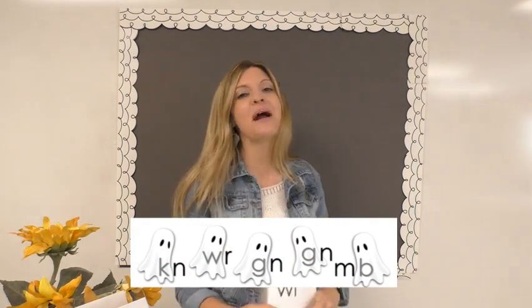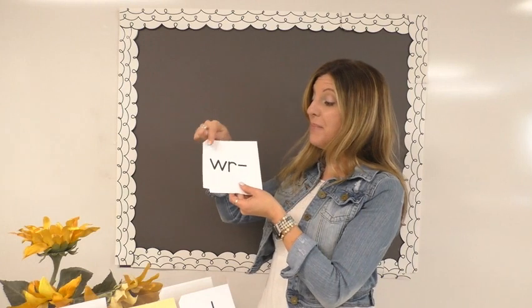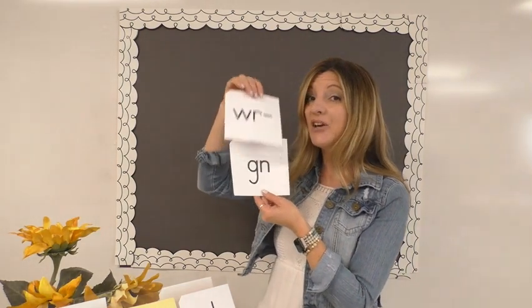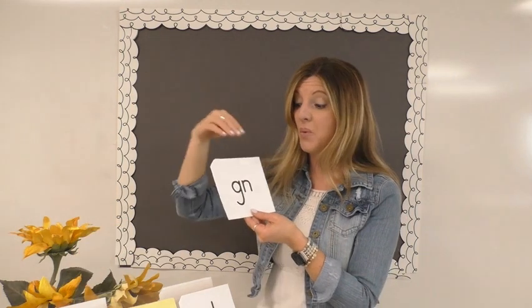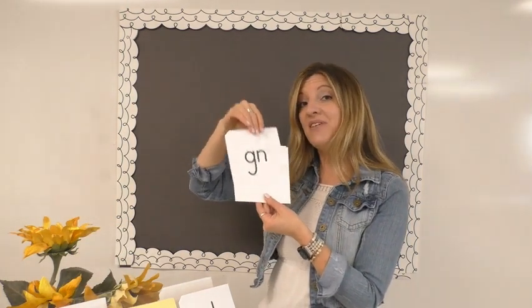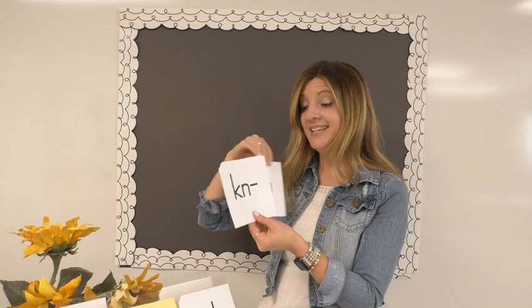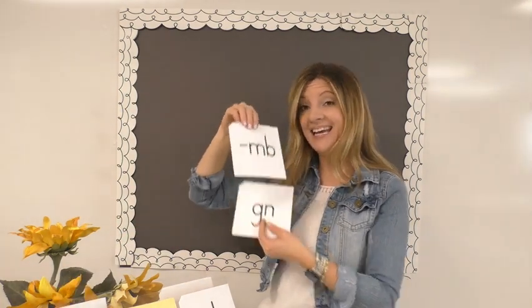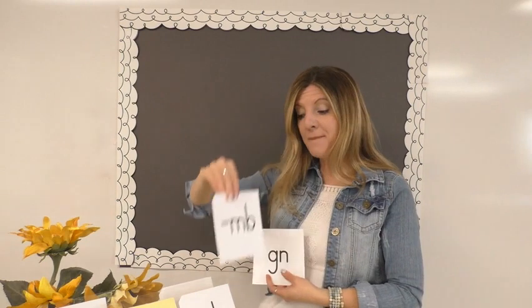Let's play around with some of these silent letter digraphs decoding single syllable words. If you notice that W-R has this line, it means it can only go at the beginning of a word. G-N can be found at the beginning or the end. K-N can only be found at the beginning, and M-B is only at the end.